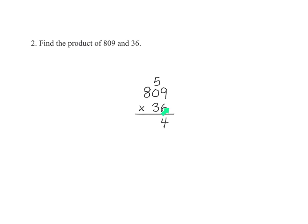And then multiply 6 times 0. Well, that gives us 0, so then we add the 5, and that gives us 5. Then we multiply the 6 by what's in the 100's place, and that is 6 times 8, and that gives us 48.